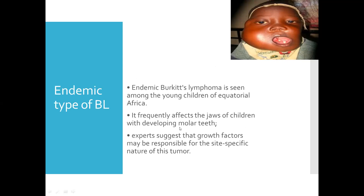The endemic type of Burkitt's lymphoma is seen among young children of equatorial Africa. It frequently affects the jaw of children with developing molar teeth. Experts suggest that growth factors may be responsible for the site-specific nature of this tumor. As you can see in this image, Burkitt's lymphoma is affecting the jaw — unilateral jaw involvement.